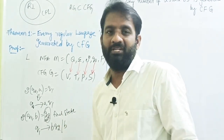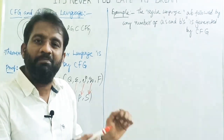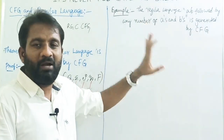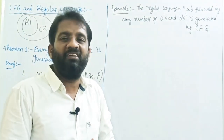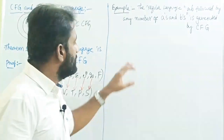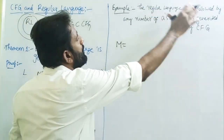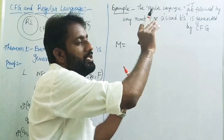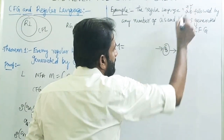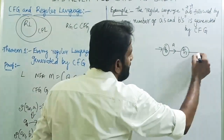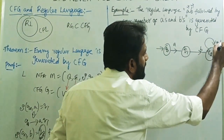Let me take one example to prove this theorem. The given regular language is AB followed by any number of A's and B's. First, construct the machine for this language. Starting state Q0, with input A goes to Q1, with input B goes to Q2. Any number of A's and B's forms a self-loop on Q2. Make Q2 the final state.